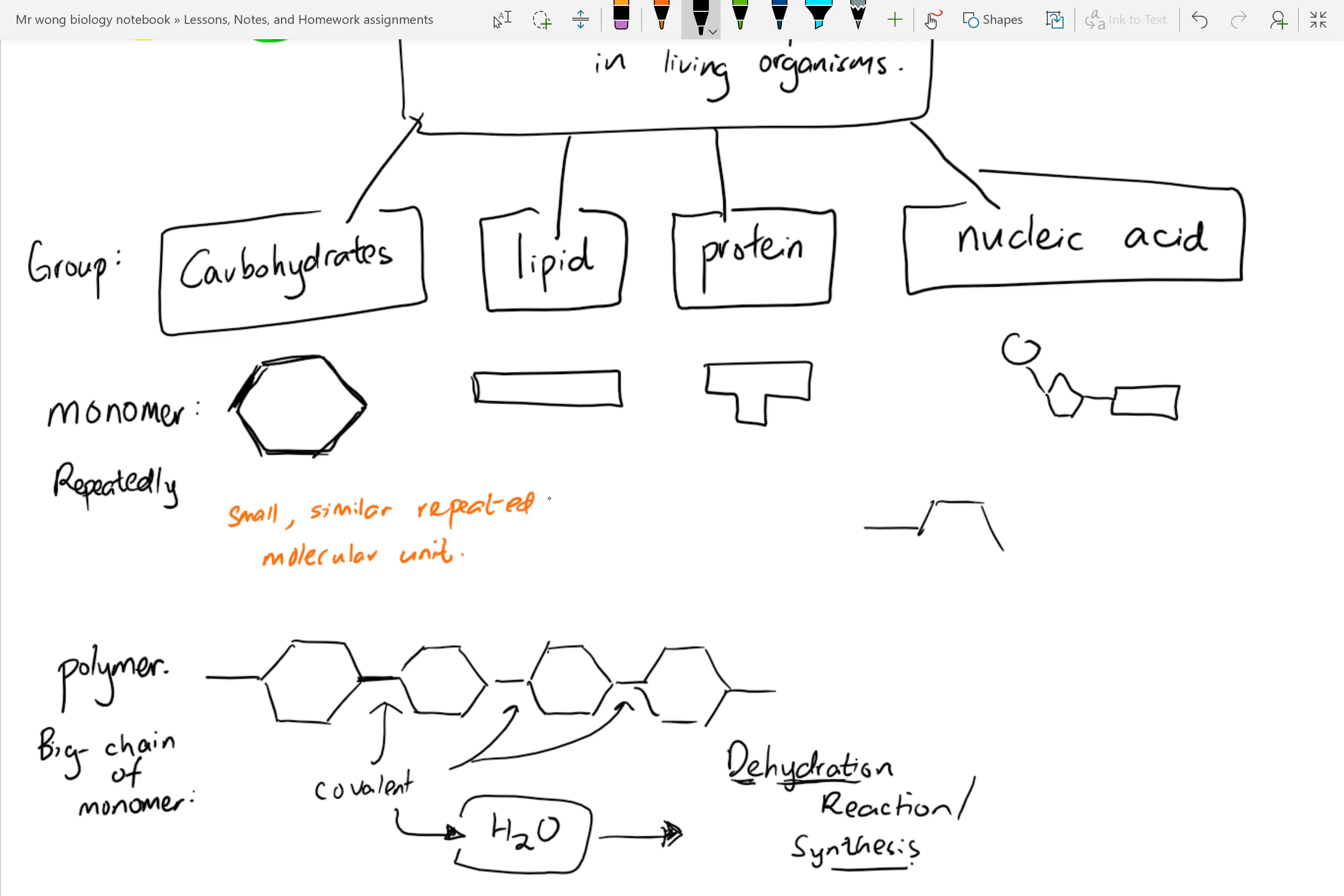So the reverse is also true. So let's say if I have a polymer, basically a long chain of monomers, how do I break this bond? How do I break this covalent bond? All I need to do is take a water molecule, H2O, take a water molecule, attack it, and it will break. So I will be able to release one monomer